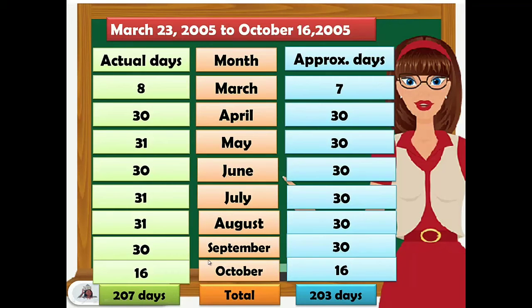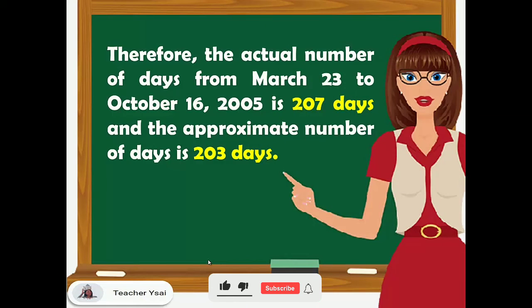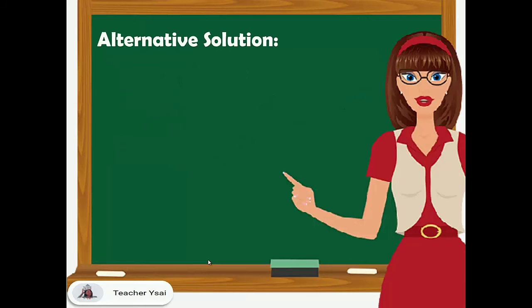So that is how we're going to solve for the actual days and approximate days. Therefore, the actual number of days from March 23 to October 16, 2005 is 207 days, and the approximate number of days is 203 days.